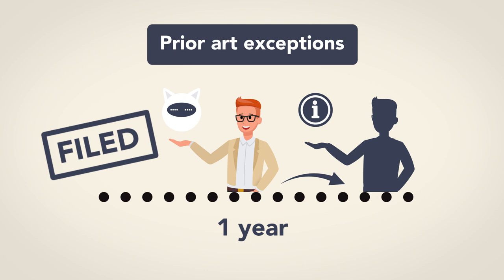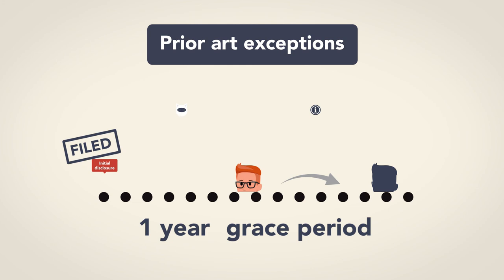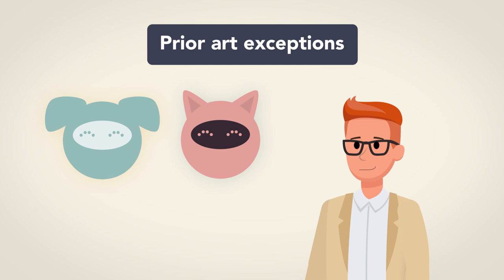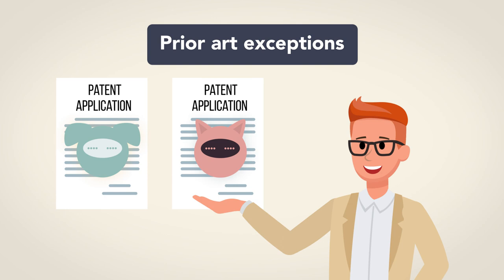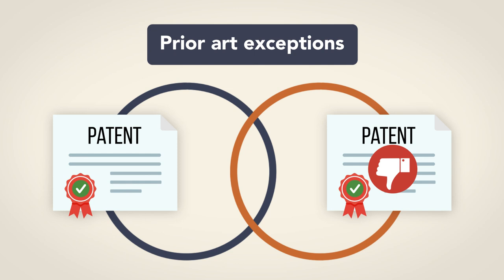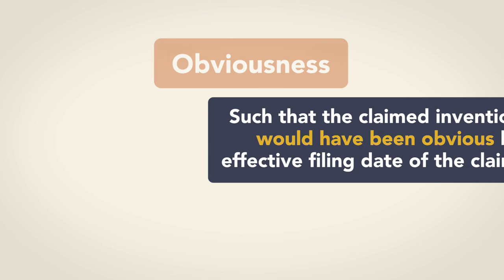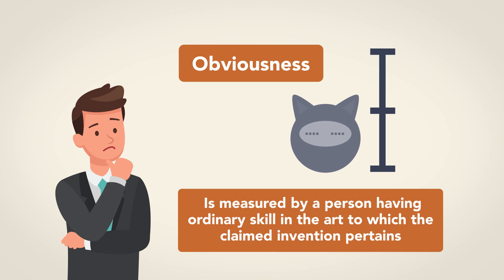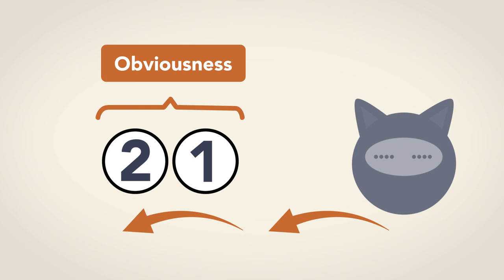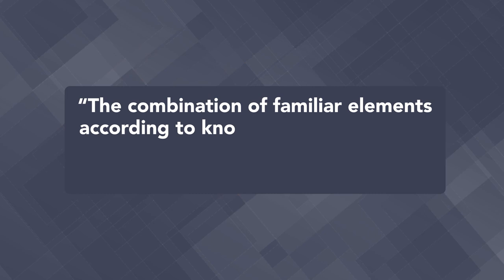Thus, inventors effectively have a one-year grace period — they can wait up to one year from initial disclosure before filing their applications. In addition, patent applications by the same inventors, or based on information obtained from those inventors, do not constitute prior art. Even if a patent claim is not identical to the prior art, the claim can still be rejected if the differences between the claimed invention and some prior art are such that the claimed invention as a whole would have been obvious before the effective filing date. Obviousness is measured by a person having ordinary skill in the art to which the claimed invention pertains. Typically, two or more prior art references are combined to reach an obviousness determination, and there must be some motivation or reason to combine them. The combination of familiar elements, according to known methods, is likely to be obvious when it does no more than yield predictable results.